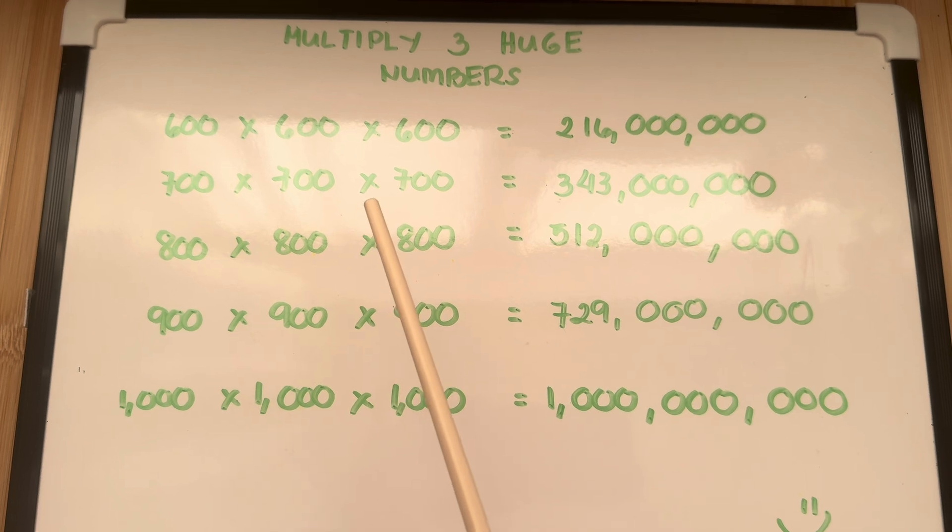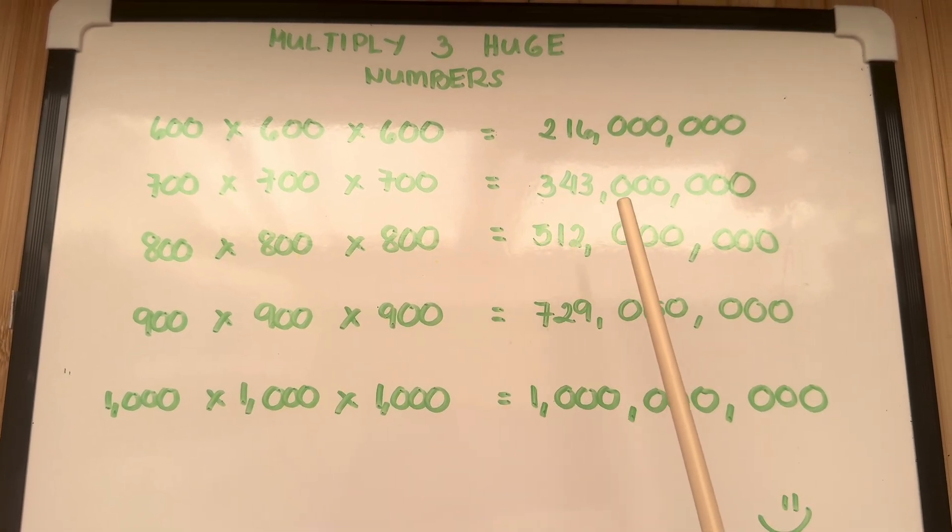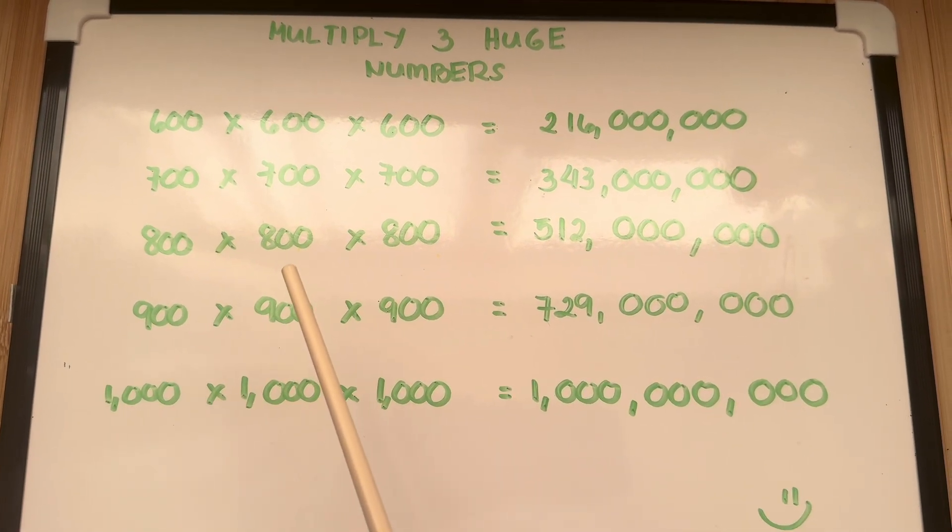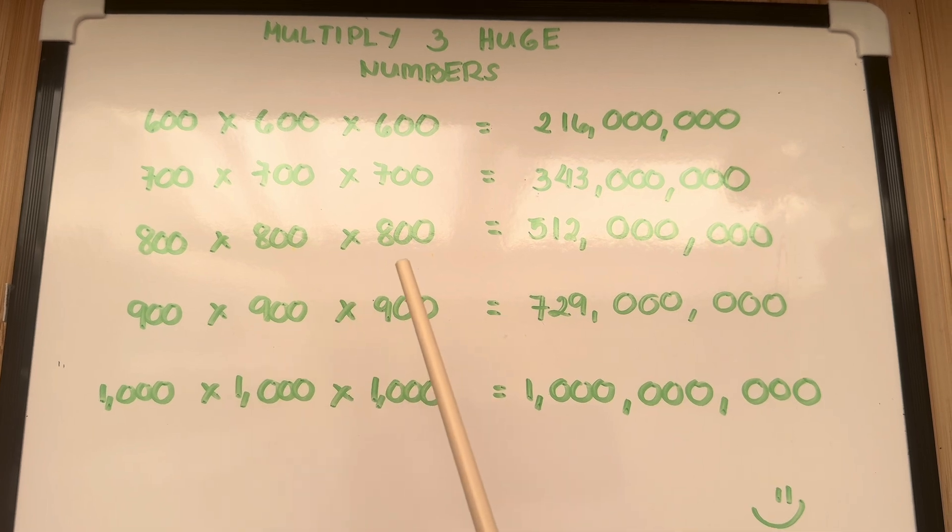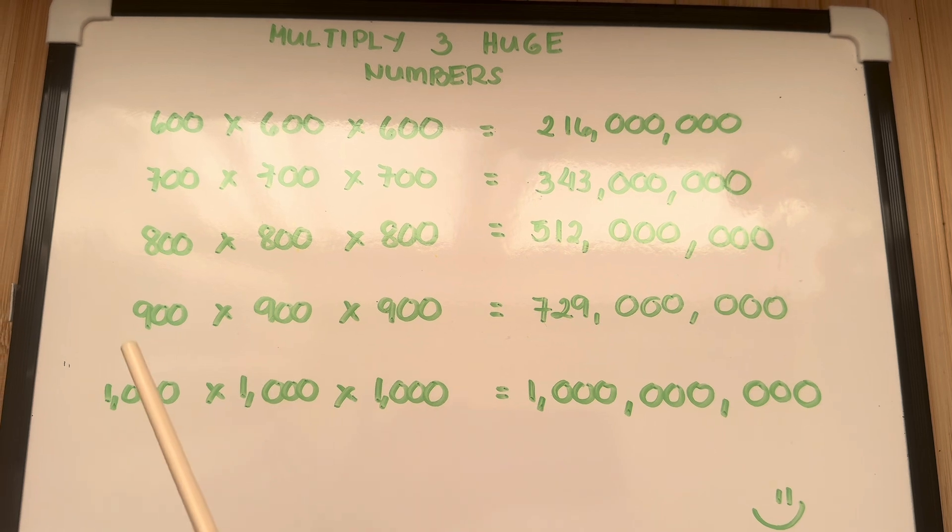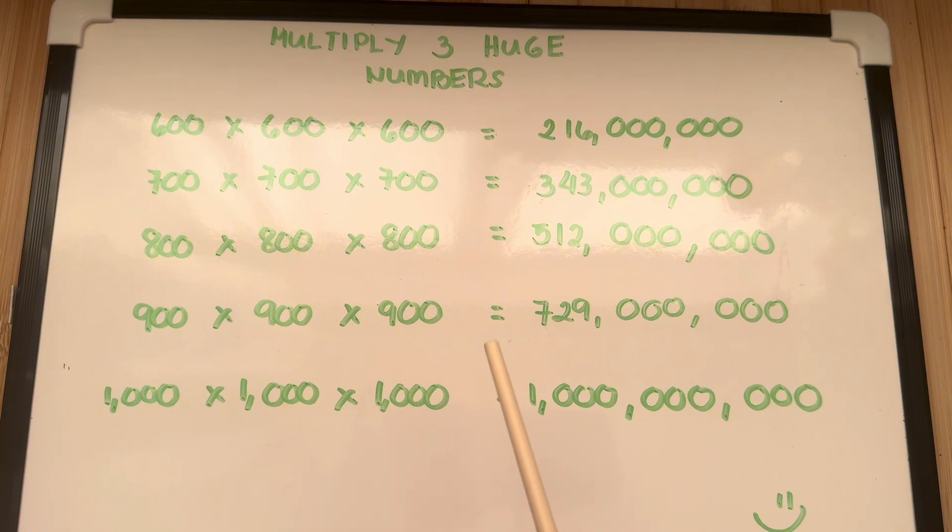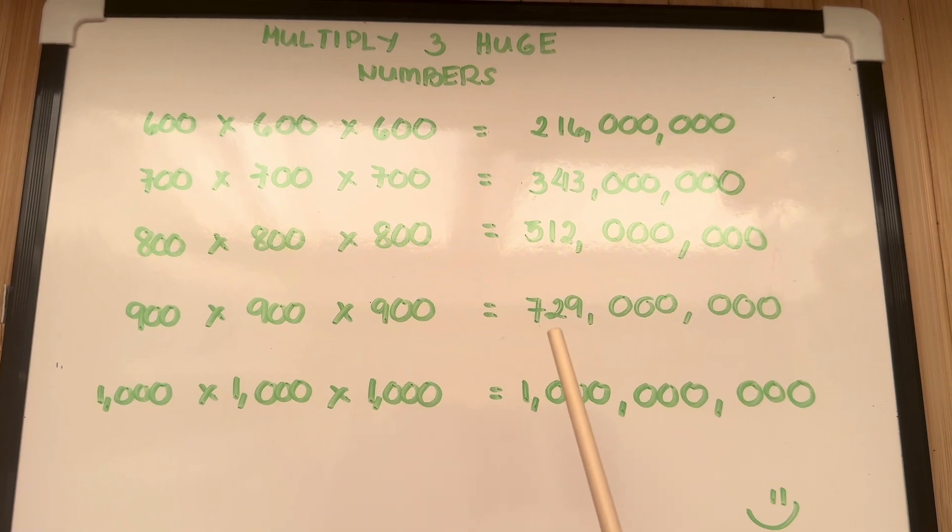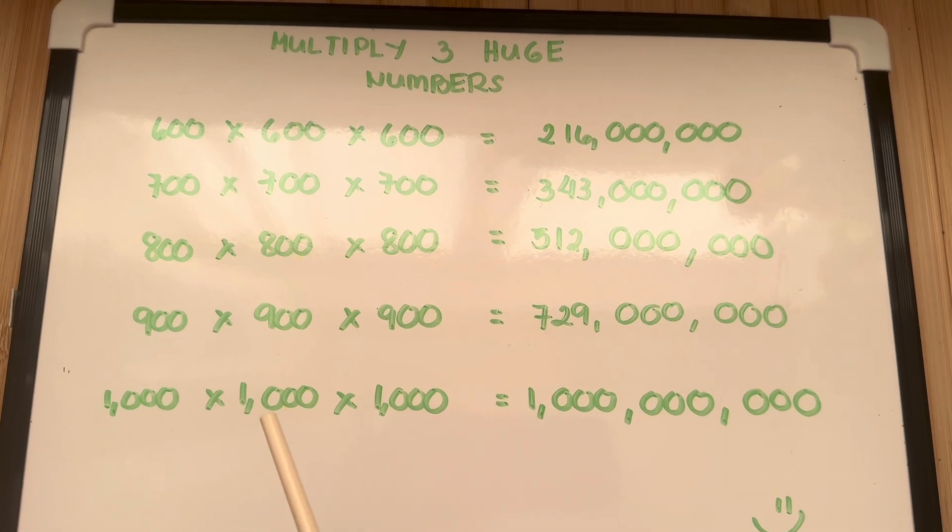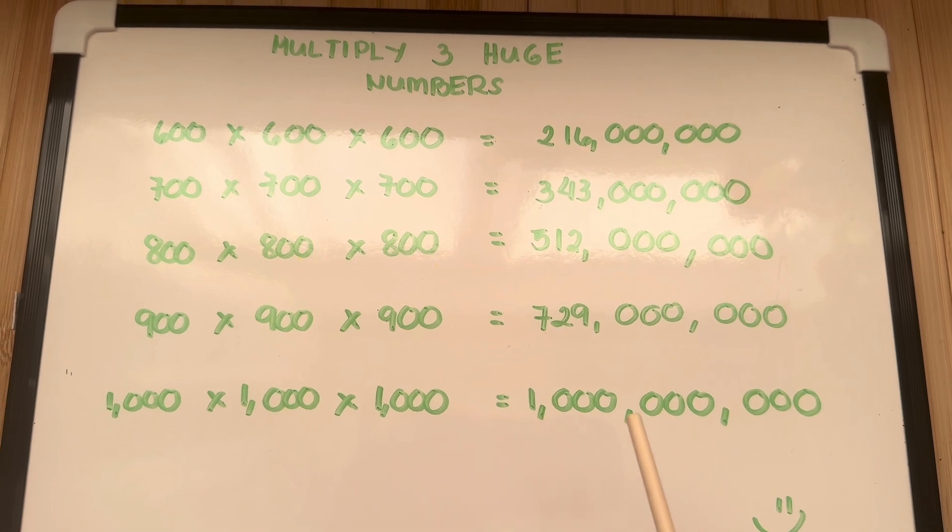700 times 700 times 700 is equals to 343 million. 800 times 800 times 800 is equals to 512 million. 900 times 900 times 900 is equals to 729 million. And lastly, 1,000 times 1,000 times 1,000 is equals to 1 billion.